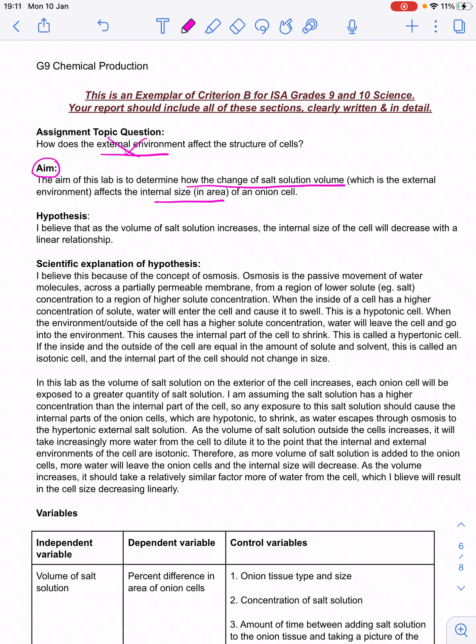And in your lab, I think it's best if you express it as a question. But you can see here that they've clearly identified in their aim, the independent variable has been clearly described, the change in the salt solution volume. They didn't just say volume, they expressed that they're talking about a salt solution, and that that's what they're going to change, their independent variable. And they want to see its effect on the internal size, and they've specified we're talking about area of the onion cell.